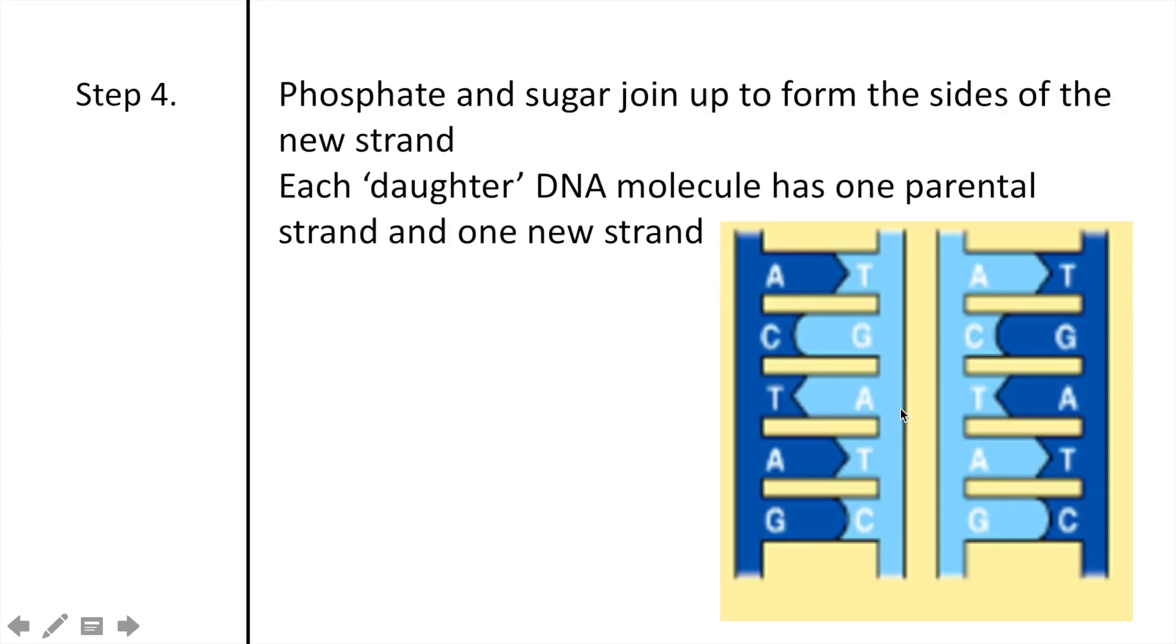Step four, we have the phosphate and sugar joining up in order to form the sides of the new strand. So here we have the phosphate and the sugars. Remember that they will join in onto the nitrogen-containing bases. And now we have each daughter DNA molecule having one parental strand, which is in the dark blue, and the inside one is the new strand that has been added.